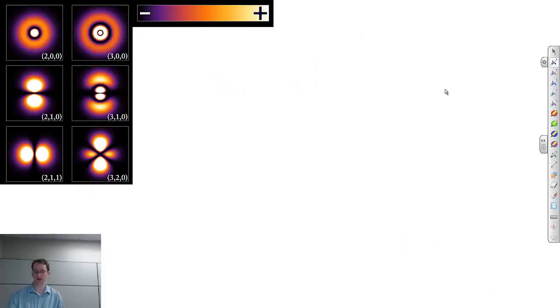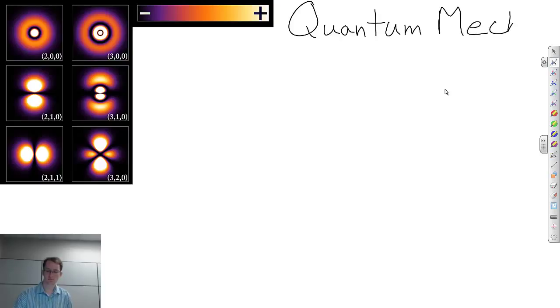So how do we describe this? How do we describe this probability of finding a high probability of finding an electron here, and a low probability of finding an electron here? Well, we turn to something that we call quantum mechanics. And in quantum mechanics, you have these really big equations. And what we want to do is, for this class, we want to take that big equation and boil it down to very simple terms. And there are four very simple terms that will describe how an electron moves around the nucleus of an atom.